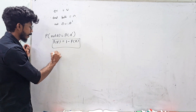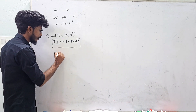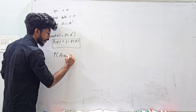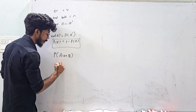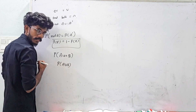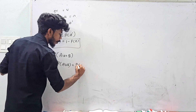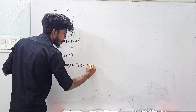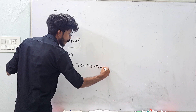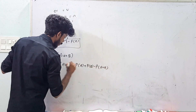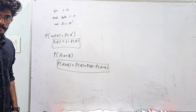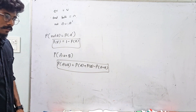Let me show you the main set formula. The probability of A union B — what is the probability of A union B? It is probability of A plus probability of B minus probability of A intersection B. This is the main formula.